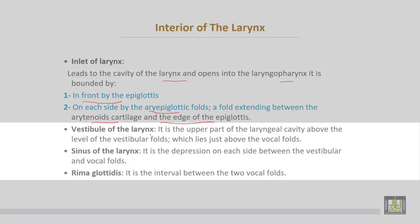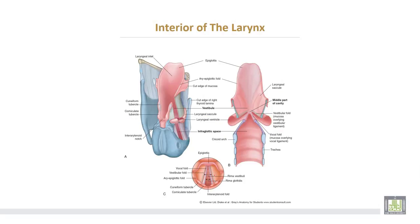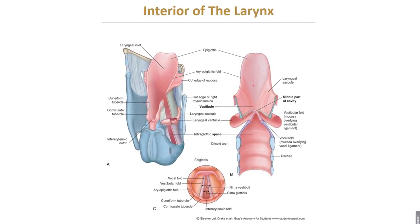The vestibule of the larynx is the upper part of the laryngeal cavity, above the level of the vestibular folds, which lie just above the vocal cords. The sinus of the larynx is a depression on each side between the vestibular and the vocal folds. The rima glottidis is the interval between the two vocal folds.